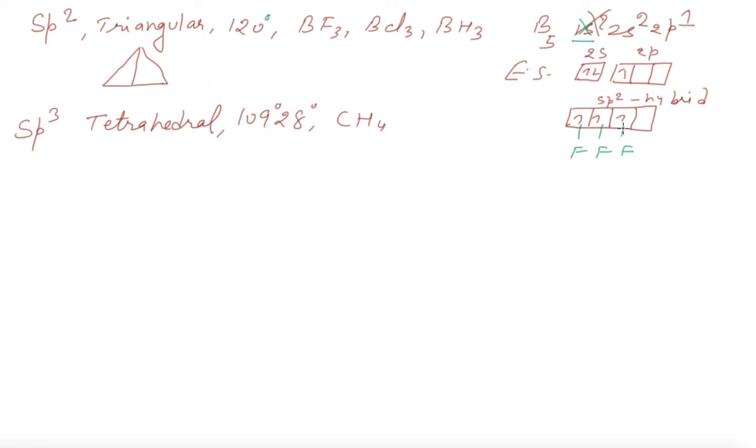Now come to SP³ - tetrahedral. We are taking the example methane. Central atom is carbon, atomic number is 6. Electronic configuration: 1s² 2s² 2p². In excited state, ground state will not participate. In 2s there are 2 electrons and in 2p there are also 2 electrons. In excited state, one electron will jump from 2s and go to 2p, forming SP³ hybrid orbitals. Three lobes of p and one of s - four lobes total.